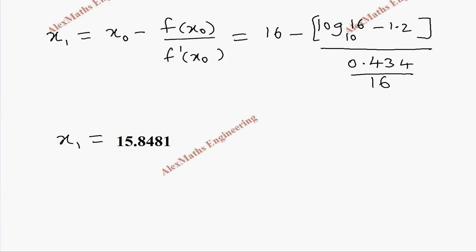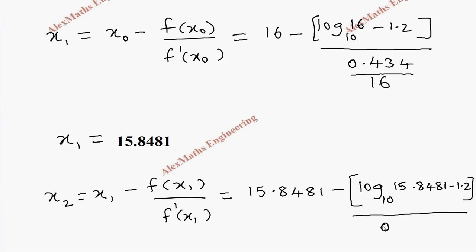Now in the same way, let's calculate x_2. x_2 is x_1 minus f of x_1 divided by f dash of x_1. So this is 15.8481 minus log of 15.8481 base 10 minus 1.2 whole divided by 0.434 divided by 15.8481.